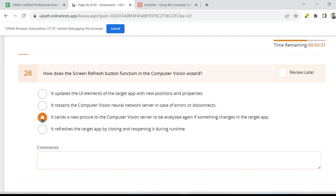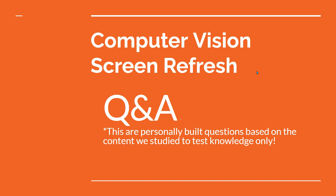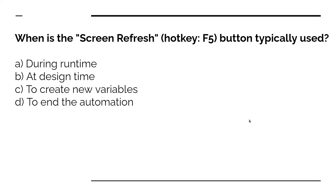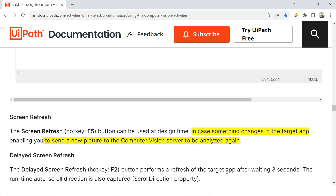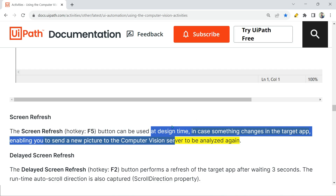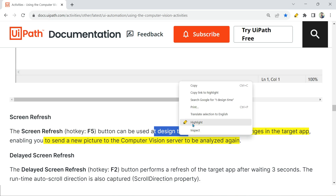Now let us face some alternative questions personally prepared by me, which might help you not get confused when selecting the right answer. First custom question: when is the screen refresh or the F5 hotkey typically used? Options are: during runtime, at design time, to create new variables, or to end the automation. Pause this video and comment your answer. The answer is at design time — as the documentation shows, the button can be used at design time while you are designing.